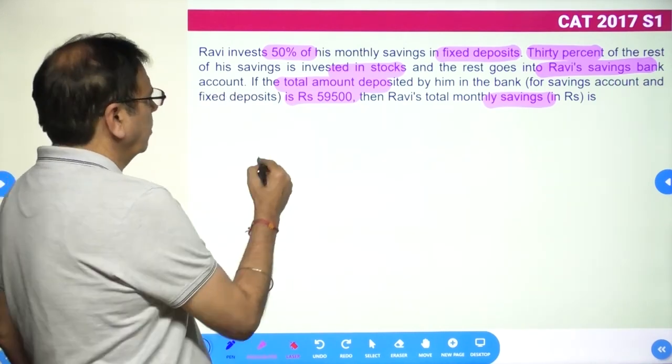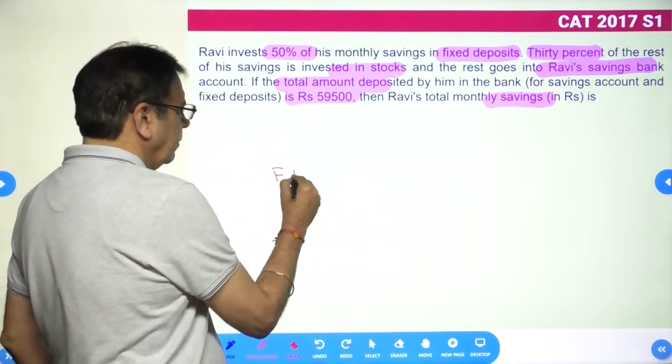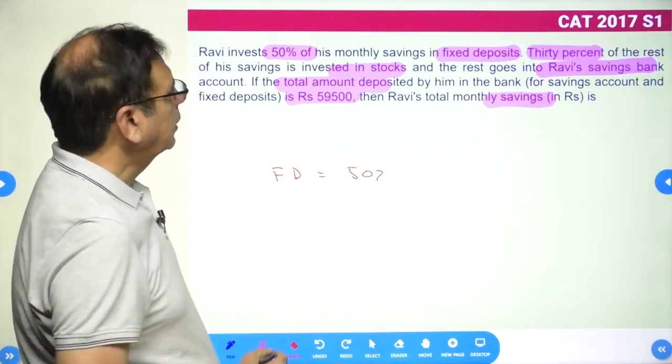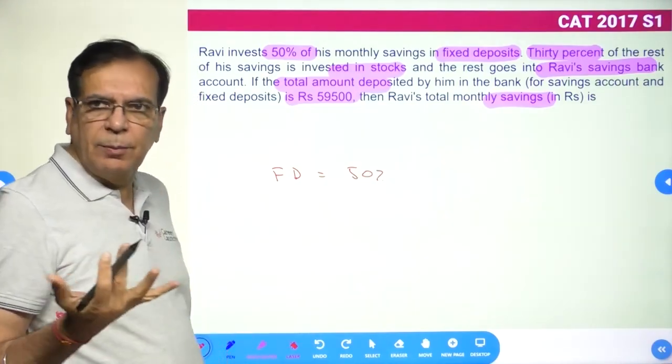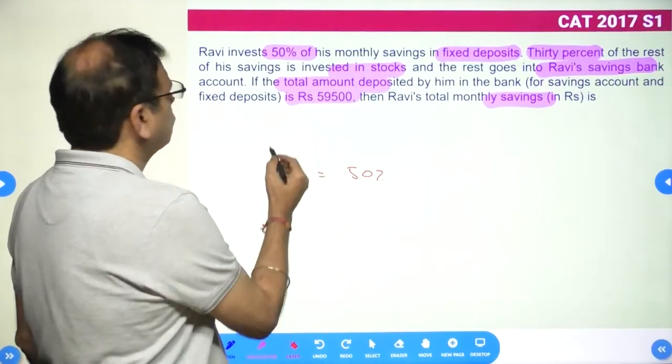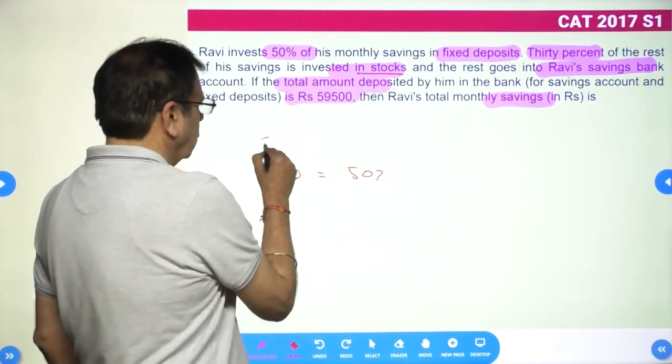Ravi invests 50% of his savings in fixed deposit. So fixed deposit is 50%. 30% of the rest—30% of 50% is 15%—goes into stocks.